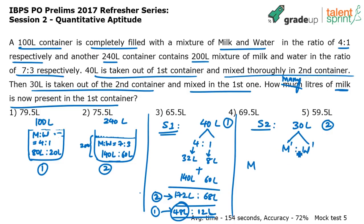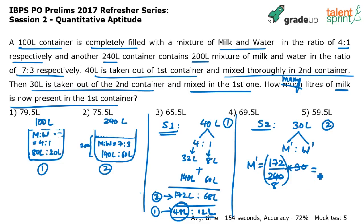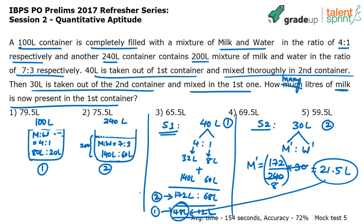To find the milk removed: 172 out of the total 240 liters (172 plus 68) multiplied by 30. Simplifying — 240 divided by 30 is 8, so it becomes 172 divided by 8. That gives 21.5 liters of milk. This 21.5 liters gets added to the 48 liters of existing milk in container 1. So 48 plus 21.5 equals 69.5 liters — that is the final answer.